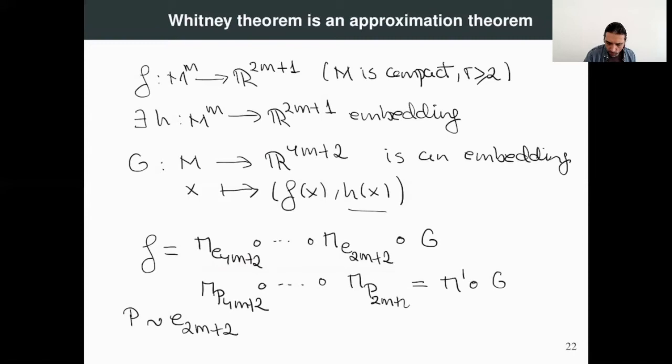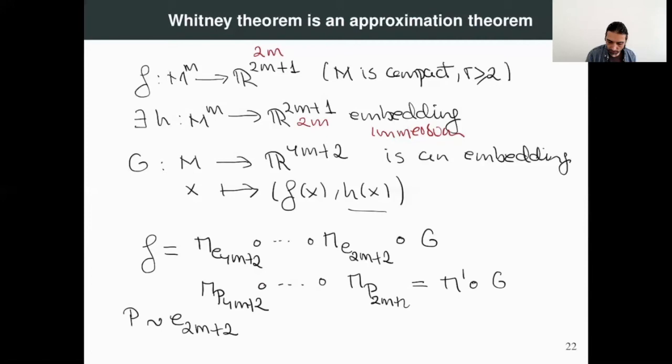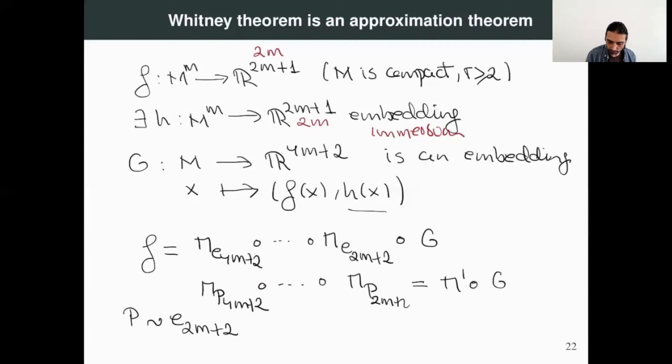By deforming a little bit, we obtain a map that is very close to f and that is an embedding. Of course we are not going to do all the details, but if you consider here 2m — since we can have an immersion from M to R^(2m) — you can repeat the rest of the proof and you're going to have an approximation of f that is an immersion. In this sense, the approximation provided by the Whitney theorem is optimal — it's sharp.